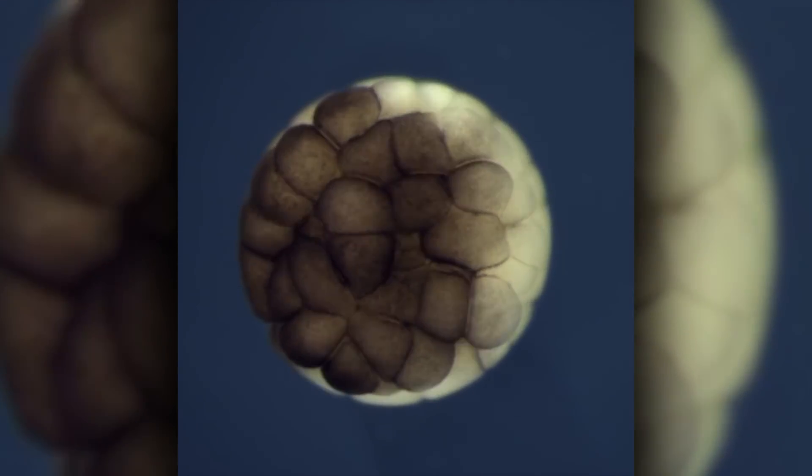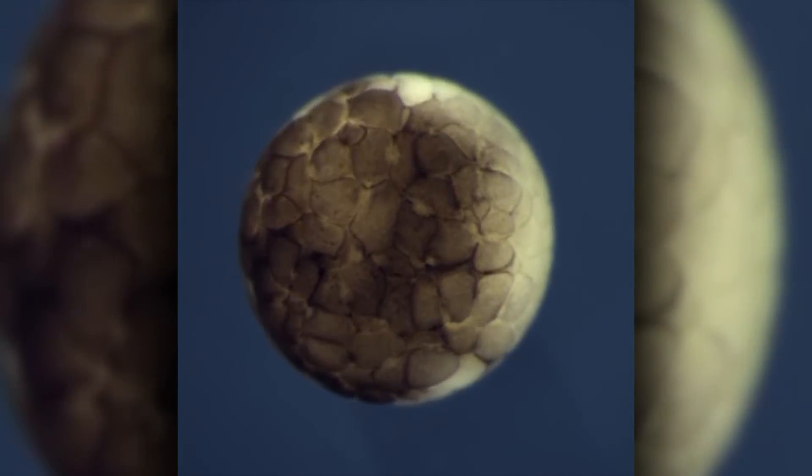In frogs, gene activity showed that even when an embryo looks like an undifferentiated blob, cells are already starting down the paths to their eventual identities.